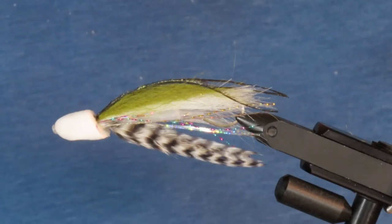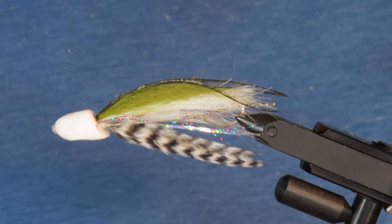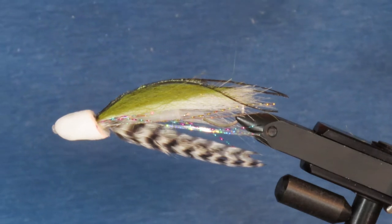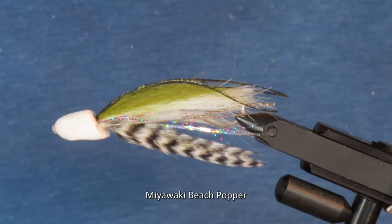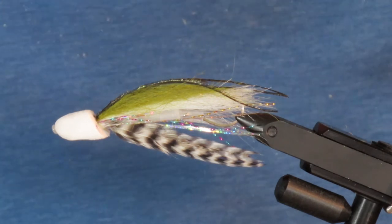Today's video is going to be a bit longer than usual. I'm going to show you how to tie an alternative version of the celebrated Miyawaki beach popper designed by Leland Miyawaki to imitate a crippled baitfish fleeing along the water surface.